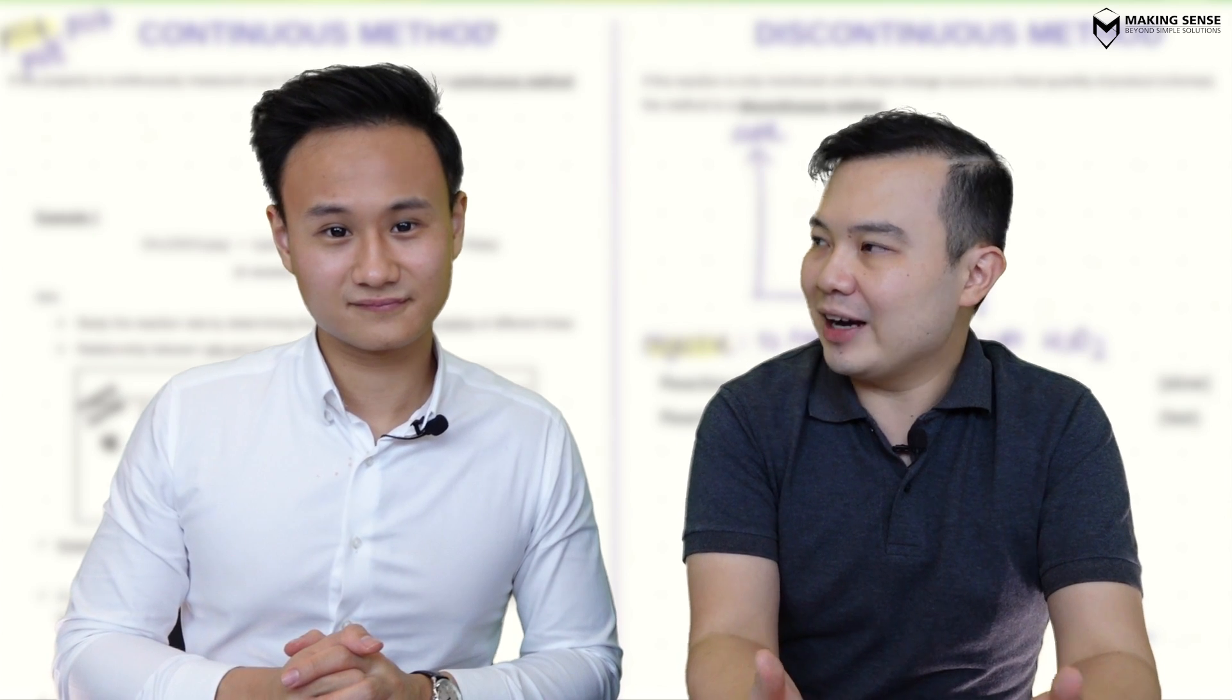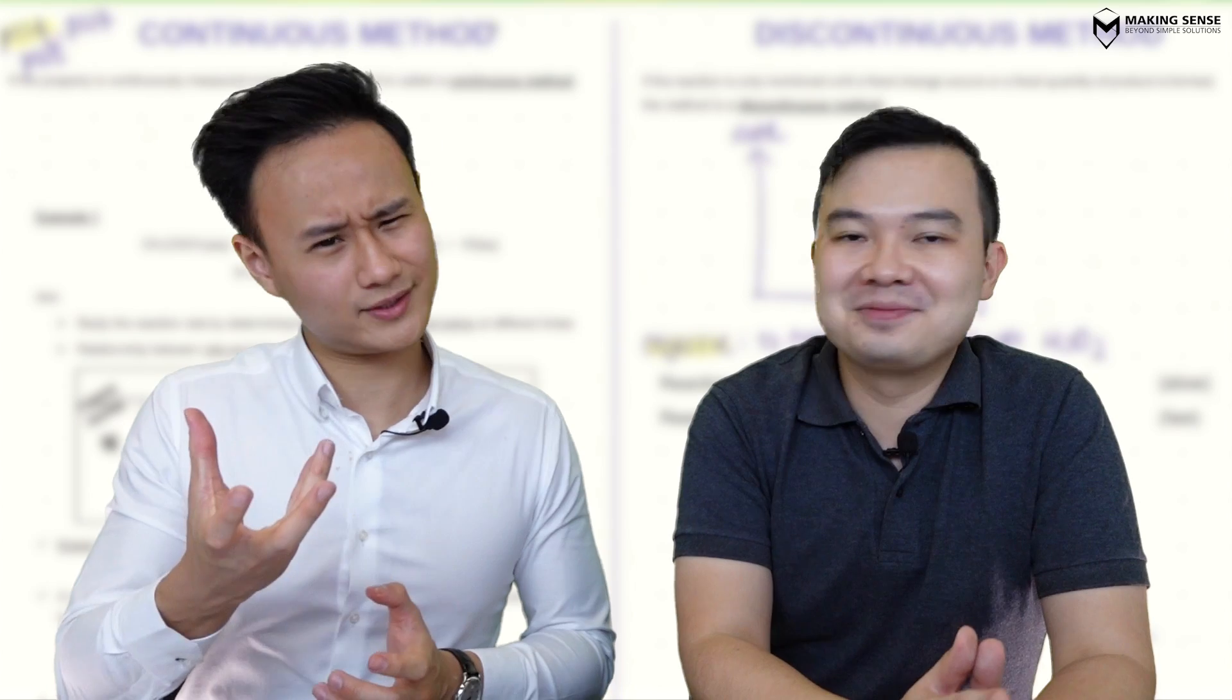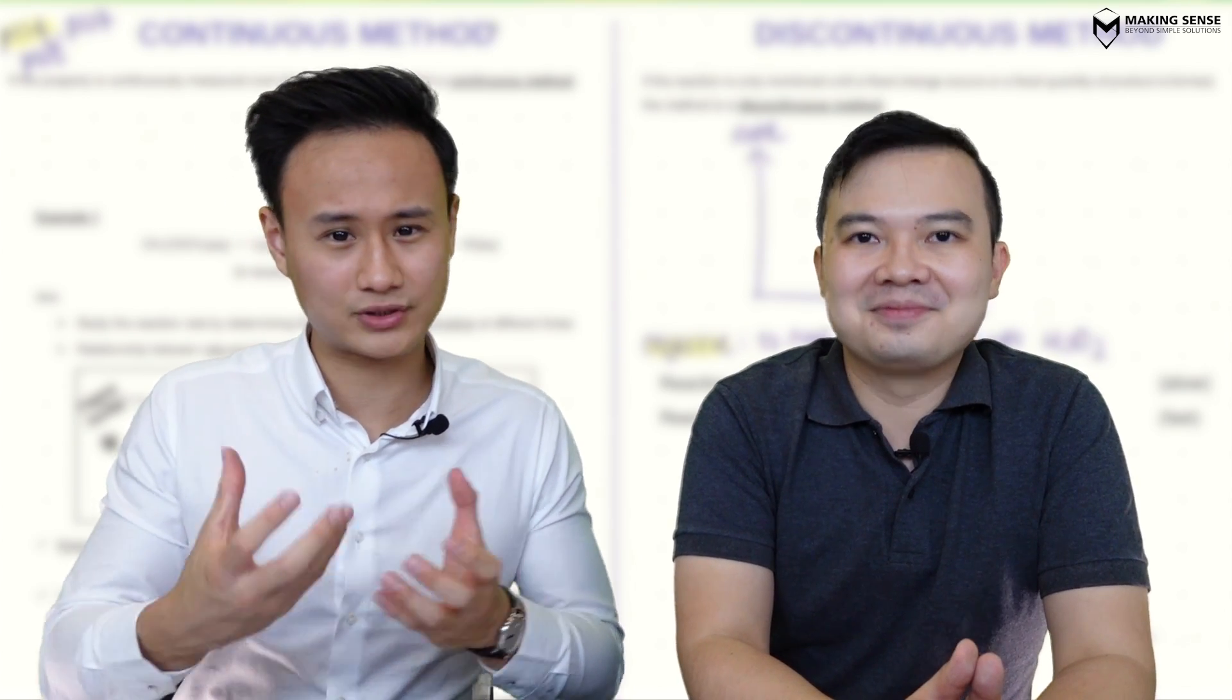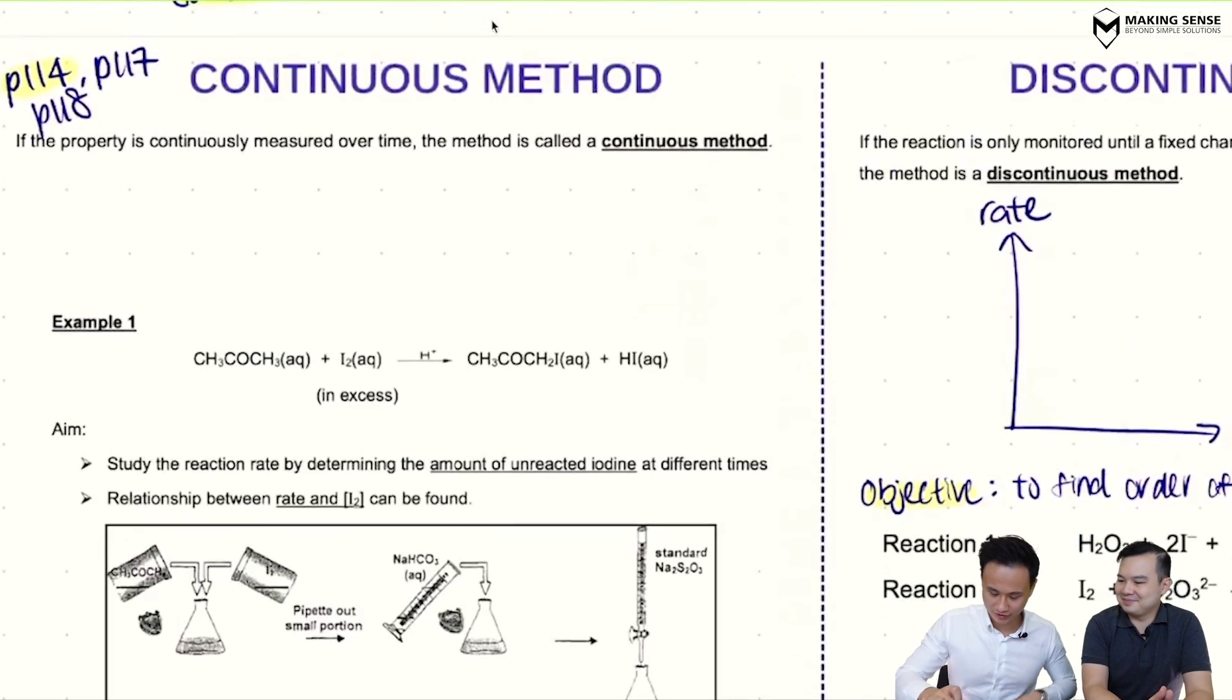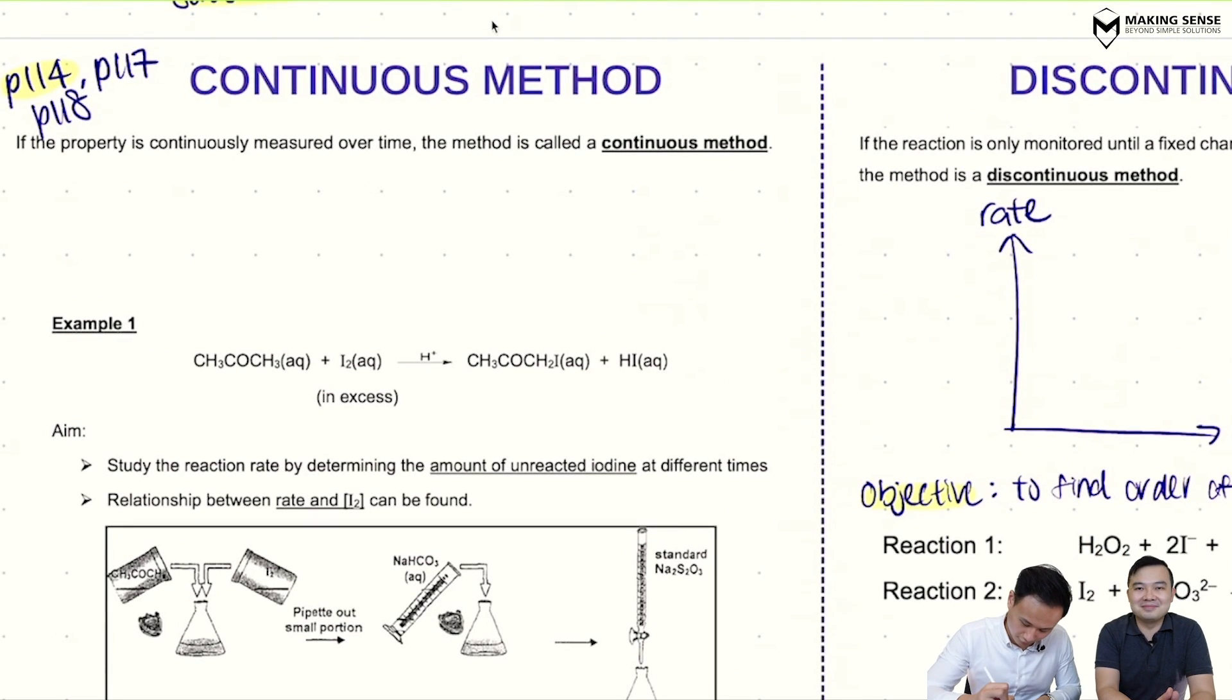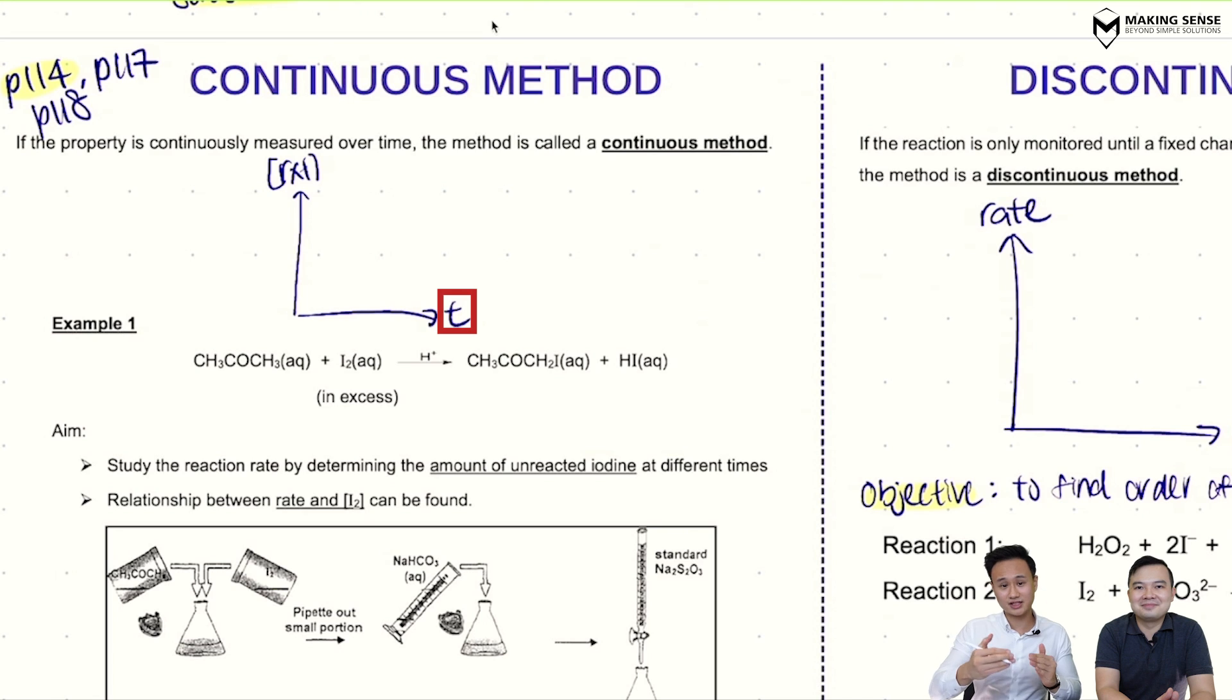If I talk about continuous methods, what are the things that come to your mind immediately? Well, the word continuous sounds like you're tracking something continuously with time. In the idea of reaction kinetics, what we're actually tracking is the concentration of a reactant with time. So we have this here. Now I'm just going to bring you through this.